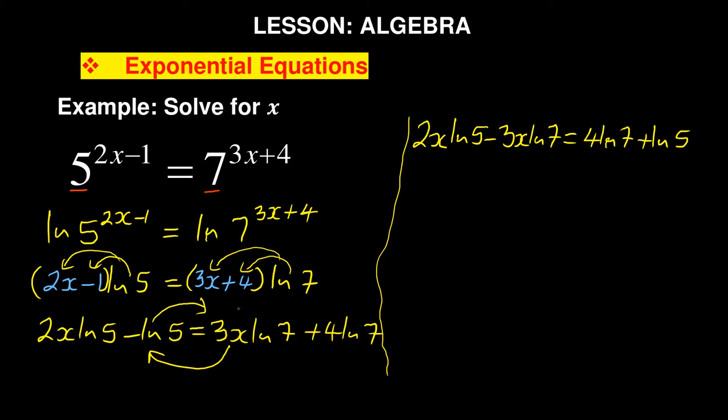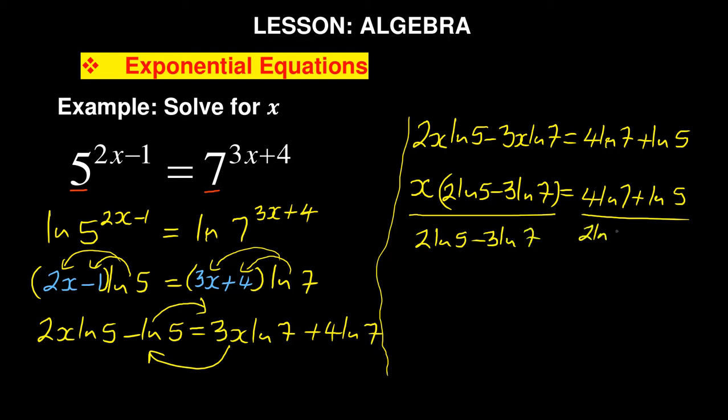You can actually factorize x to say x is common, so you've got x(2 ln 5 - 3 ln 7) equals 4 ln 7 plus ln 5. Remember, you're simplifying and solving for x, so you can divide by your (2 ln 5 - 3 ln 7), and then when you do that to cancel, you are going to have x equals...